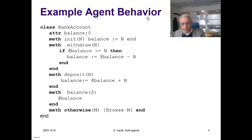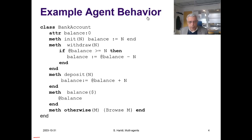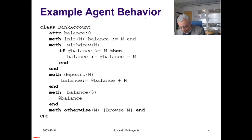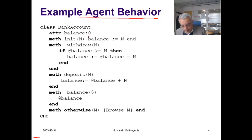Here we have an example of a class definition that represents the behavior of an object, but in our context we are going to treat this as an agent definition. This class will define the behavior of an agent. Agents have a local state — in this case the local attribute `balance` will be the local state.